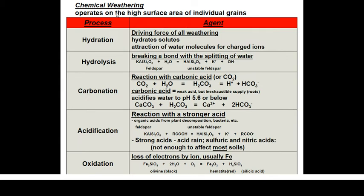When we have physical weathering, we also have chemical weathering. Chemical weathering operates on the high surface area of individual grains. Surface area is related to particle sizes — the bigger the particles, the smaller the surface area; the smaller the particle sizes, the larger the surface area; and the larger the surface area, the faster the chemical reaction. So rocks and minerals of finer particles would have a faster process of weathering due to faster chemical reactions from higher surface area.